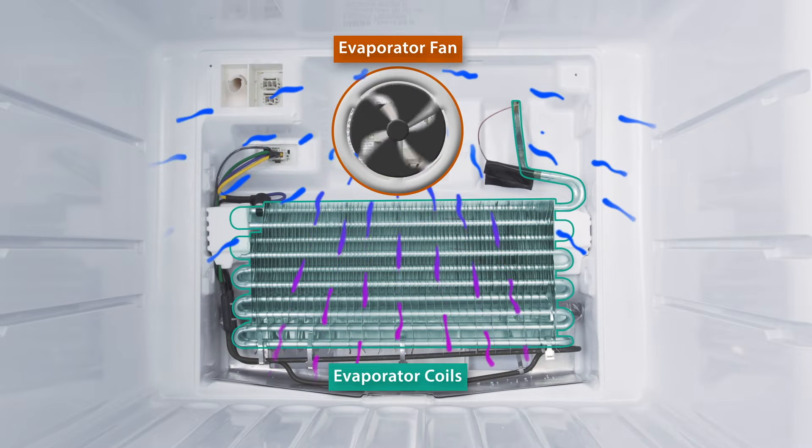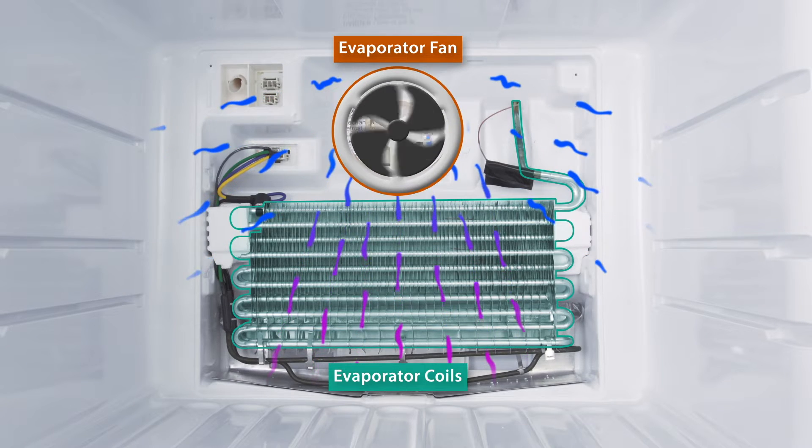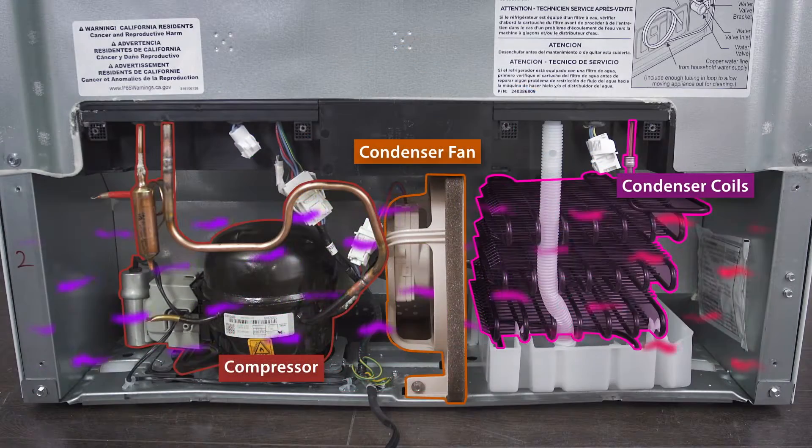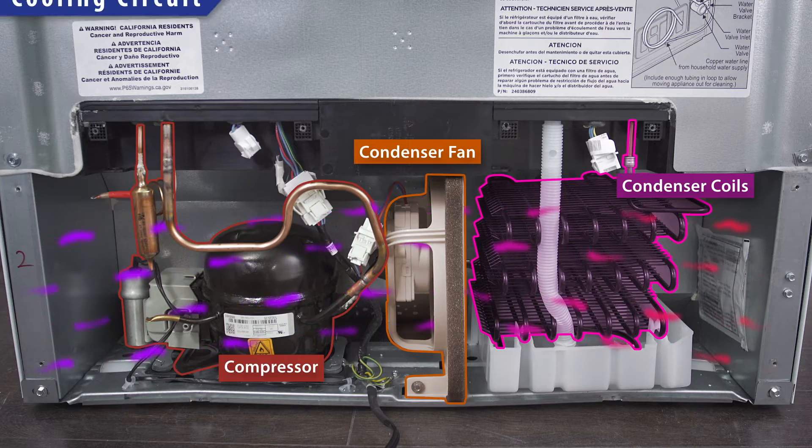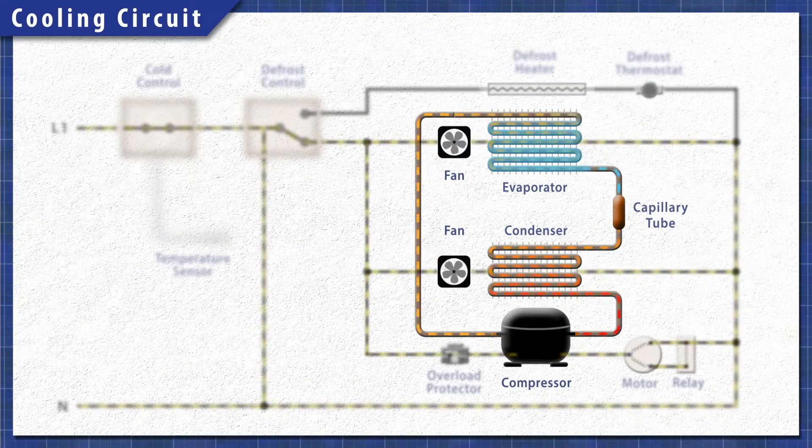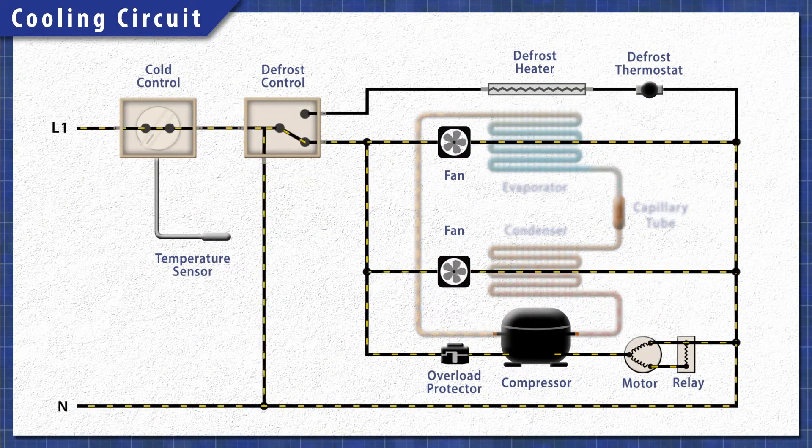In the freezer, heat is extracted by the evaporator coils and is released through the condenser coils behind the refrigerator. This process continues until the set temperature is reached.